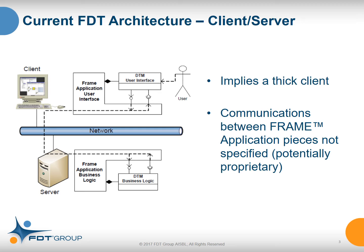The DTM is normally divided into two parts. The bottom part is the business logic for the DTM, and the upper part is the user interface. So in this configuration, the user interface is installed on the client computers and the business logic resides on the server computers. Any number of clients can then connect to this server, so you get a multi-user application with FDT. We do not specify from a standards perspective how the two parts of the frame application should communicate, which typically implies you must use frame client and server applications from the same vendor.